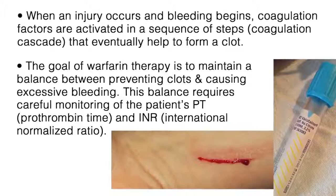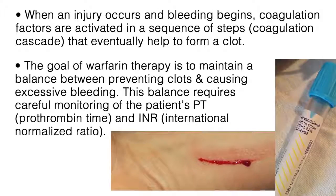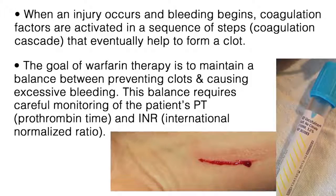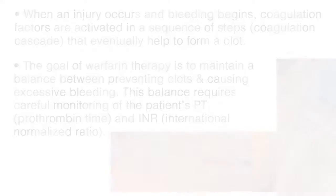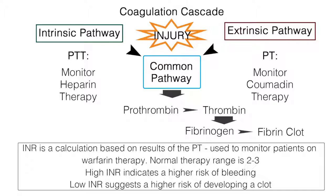This balance requires careful monitoring of the patient's PT, or prothrombin time, and INR, International Normalized Ratio. The PT measures the number of seconds it takes blood plasma to clot. It is usually performed with a partial thromboplastin time, or PTT, and together they assess the amount and function of coagulation factors. The INR is a calculation based on results of the PT and is used to monitor patients on warfarin therapy. The normal therapy range is 2-3, with a high INR indicating a higher risk of bleeding, and a low INR suggesting a higher risk of developing a clot.